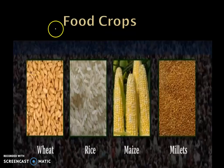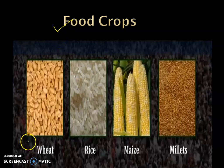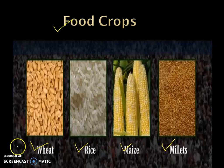Let's begin with food crops. What are food crops? The crops which are produced for human consumption are known as food crops. Major food crops of the world are wheat, rice, maize and millet. Let's learn about all of these one by one in detail.